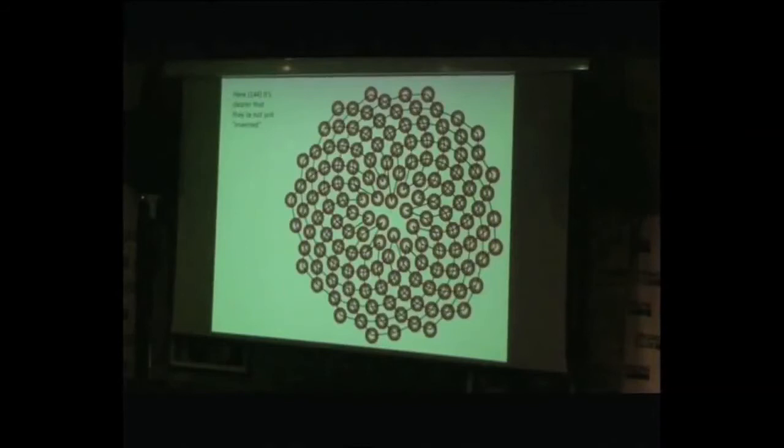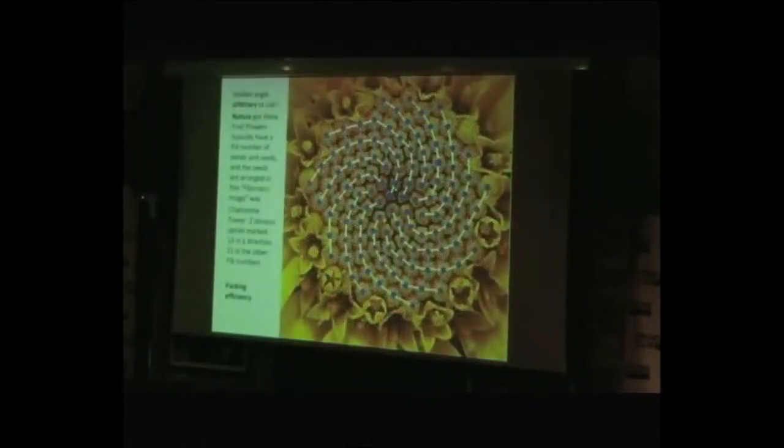It may seem rather arbitrary to add the golden angle as we're constructing these patterns, but it does seem that nature has actually got there first. These flowers typically, not invariably, but typically have a Fibonacci number of petals and of seeds. The flowers and the seeds are typically arranged in this Fibonacci image kind of way, so the spirals are clear. Here is a chamomile flower. There are two obvious spirals that have been marked, 13 in one direction and 21 in the other. And again, they're both Fibonacci numbers.